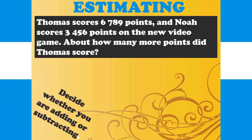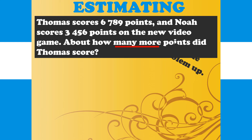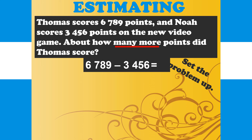Let us continue with a new word problem. Thomas scores 6,789 points and Noah scores 3,456 points on a new video game. About how many more points did Thomas score? We are going to decide whether we are adding or subtracting by comparing the numbers and looking for a clue word. The clue words here are 'many more,' which represents subtraction. Our number sentence is 6,789 minus 3,456.